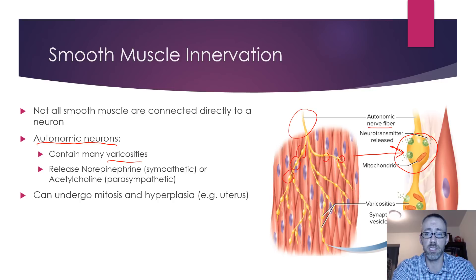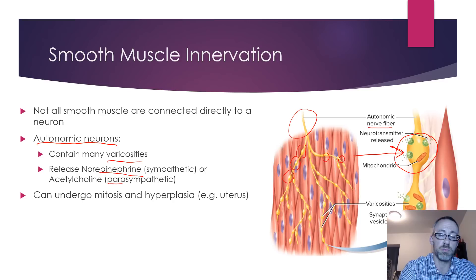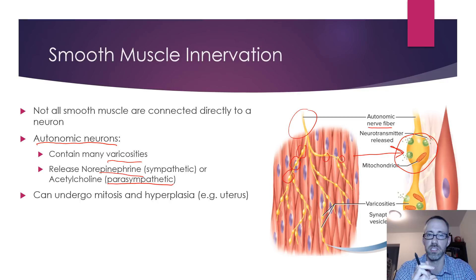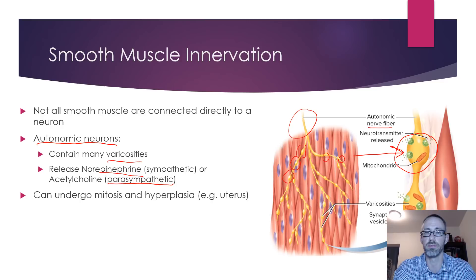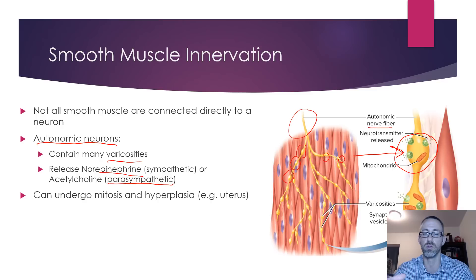That input can be excitatory or inhibitory — you could see norepinephrine, which is from the sympathetic nervous system (part of the autonomic nervous system), or acetylcholine from the parasympathetic nervous system. These two parts typically have opposite actions on organs; for example, norepinephrine causes contraction of smooth muscle while acetylcholine would cause relaxation. The neurotransmitter is not released onto a specific end plate but rather diffuses to interact with multiple smooth muscle cells and their receptors.